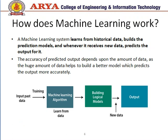How does machine learning work? Machine learning works on the basis of previous historical data, builds prediction models, and whenever it receives new data, predicts the output. In the building block diagram, we provide input data and train the model by applying machine learning algorithms — such as the KNN algorithm — which build logical models that produce output. When producing output, we provide more data.